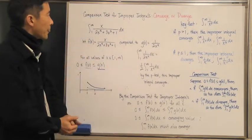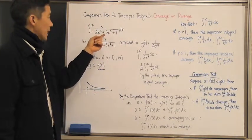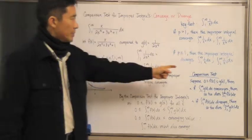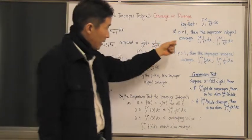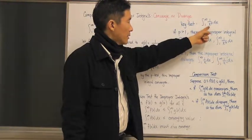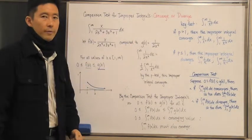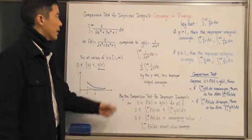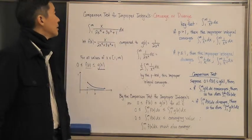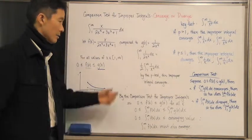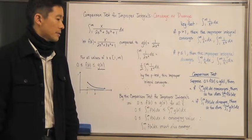To wrap things up: when we have improper integrals we cannot integrate directly, we use the comparison test to determine whether they converge or diverge. To apply it, we need to know exactly what function to compare to, and the key fact about simple p-integrals gives us a good means of selecting appropriate comparison functions. This will take practice, and we'll work through many of these problems in class. See you next time.